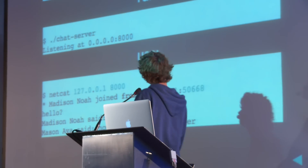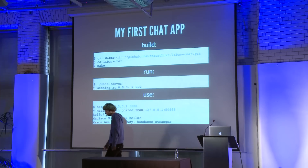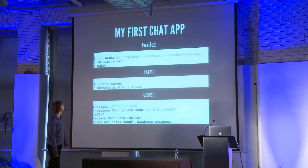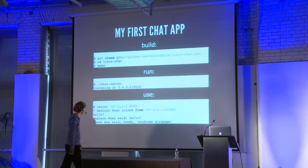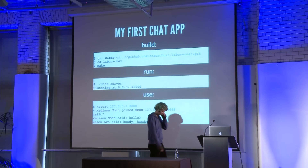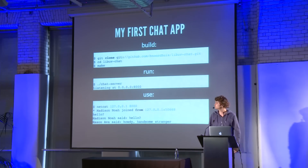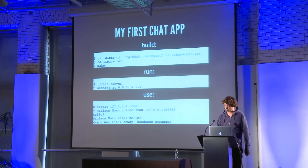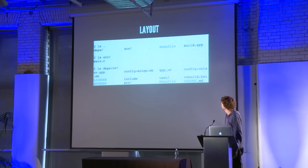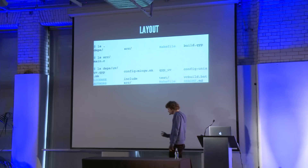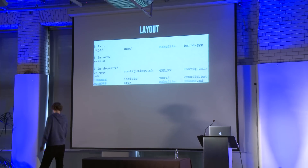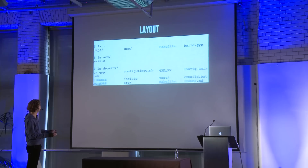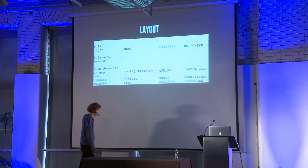On to the actual chat app. It's pretty straightforward to build and run: clone the repository, run make, and start the program. There's a top-level make file, the bulk of our program is main.c, and libuv is in deps/uv.